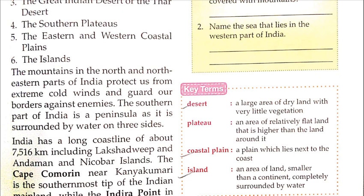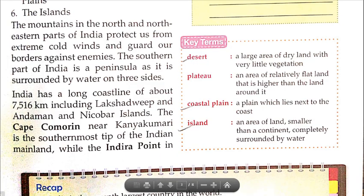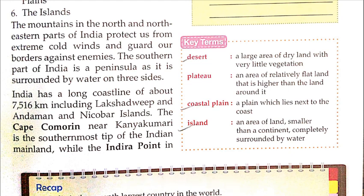India has a long coastline of about 7516 km, including Lakshadweep and Andaman and Nicobar Islands. The coastline refers to the boundary line along the water-surrounded areas. Cape Comorin near Kanyakumari is the southernmost tip of the Indian mainland — beyond this point, India's boundary does not extend.